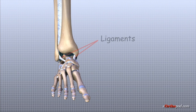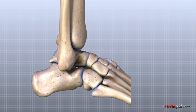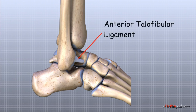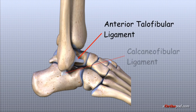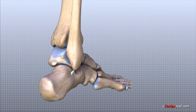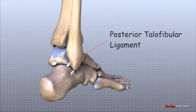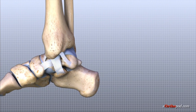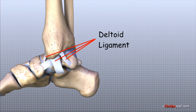Ligaments on both sides of the ankle joint help hold the bones together and stabilize the ankle. Three ligaments make up the lateral ligament complex: the anterior talofibular ligament, the calcaneofibular ligament, and the posterior talofibular ligament. A group of ligaments together called the deltoid ligament support the medial side of the ankle.